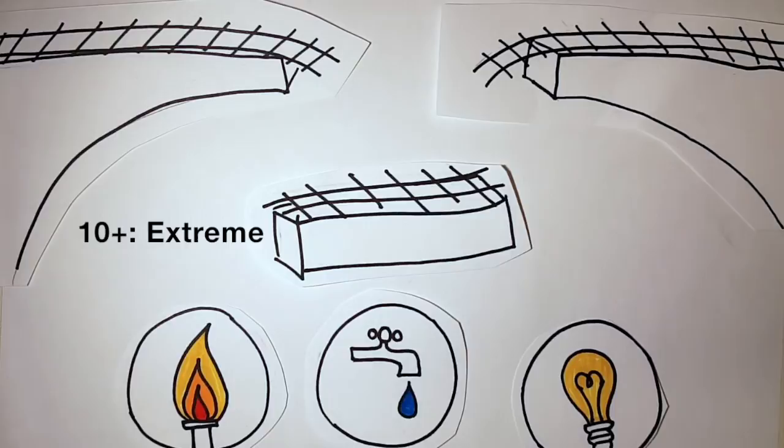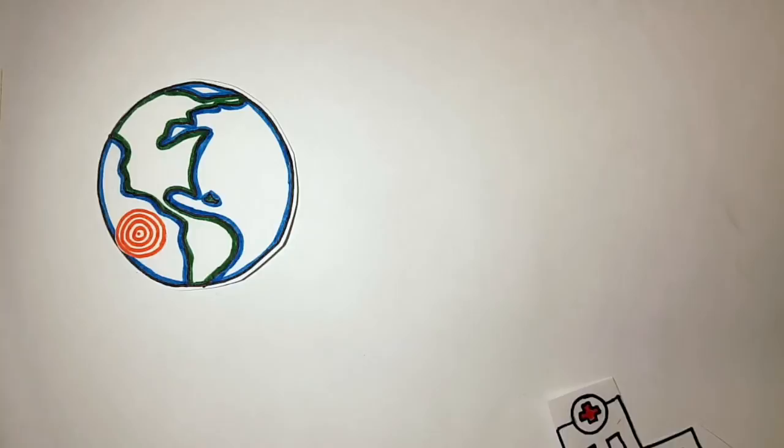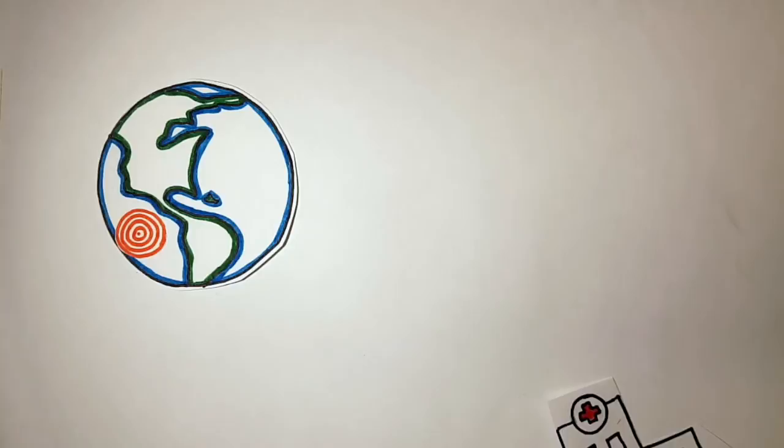Each level of the Mercalli intensity scale builds on itself and can help us understand what level of shaking might be felt and the types of damage we might see in different areas. Remember, earthquakes are unpredictable, but scientists have good estimates of which types of earthquakes might happen near you and how much shaking you could see. Check out local resources, learn your risk, make a kit, and get prepared.